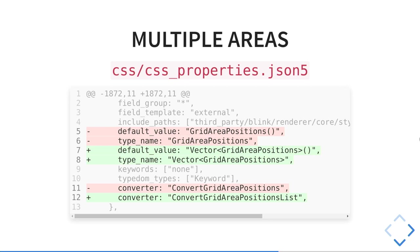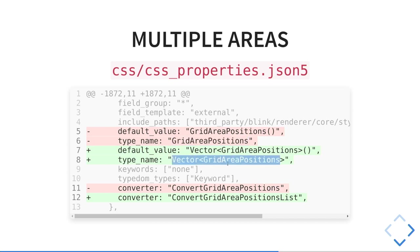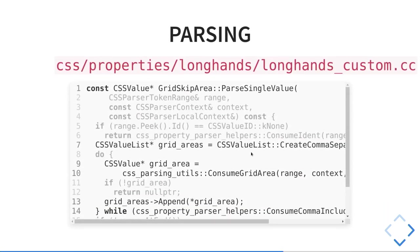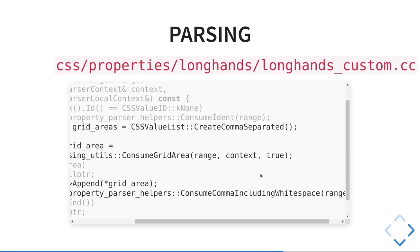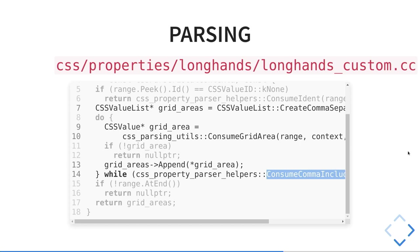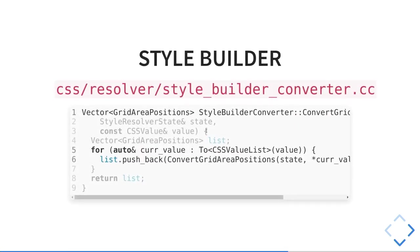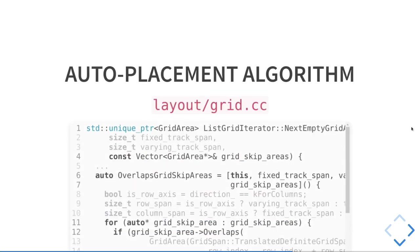Then we want more than one area. First we go to the property definition and instead of returning just one grid-area-positions, we return a list — a vector, which is the class we're using in Chrome. The parsing is still quite simple: we consume a grid-area, and while we're finding commas we try to consume another grid-area. That's mostly all. We're already getting a list of grid areas out of this. Then of course we need to change the converter — it loops the list of areas and converts them. Nothing really strange. And in the algorithm the changes are very small: the method that was checking if it overlaps with one grid area now loops all of them and checks for each. Not very performant, but it was just an example.